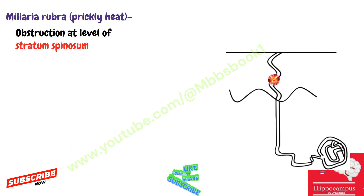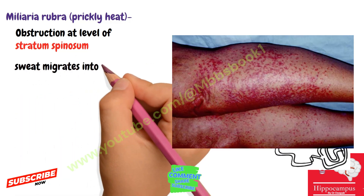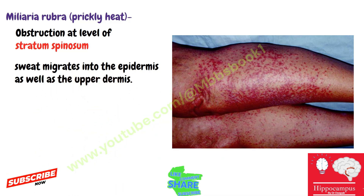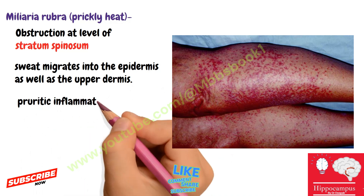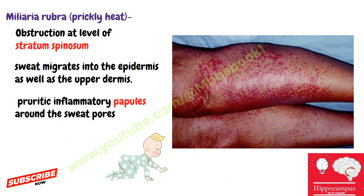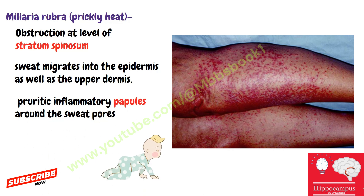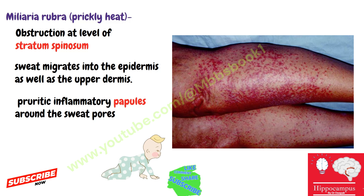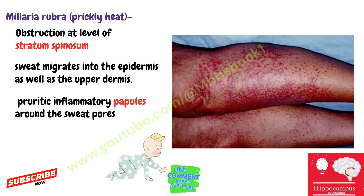When obstructed sweat migrates into the epidermis as well as the upper dermis, it causes pruritic inflammatory papules around the sweat pores. This disorder is common in infants but also occurs in children and adults after repeated episodes of sweating in a hot and humid environment. The eruption usually subsides within a day after the patient moves to a cool environment.